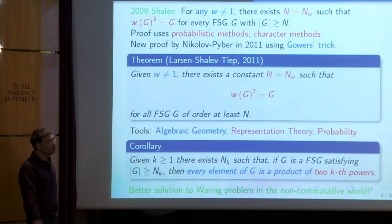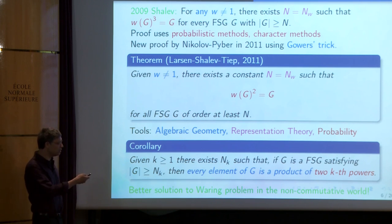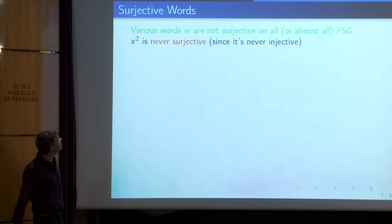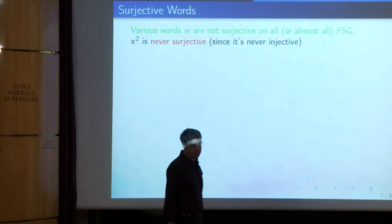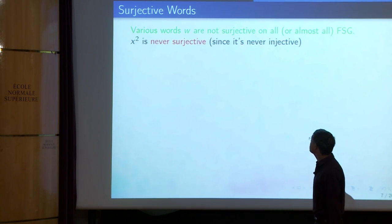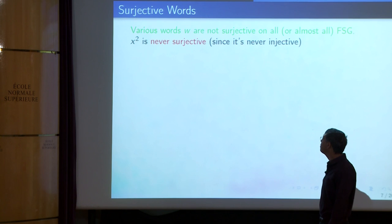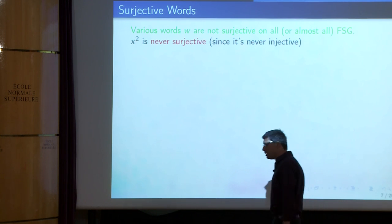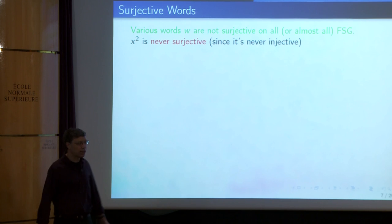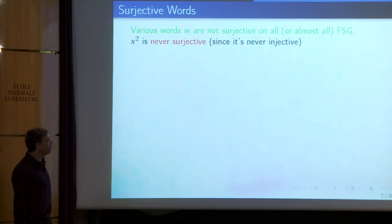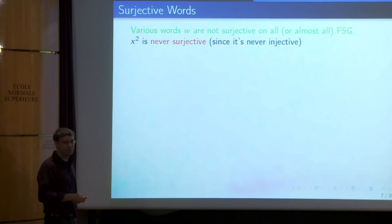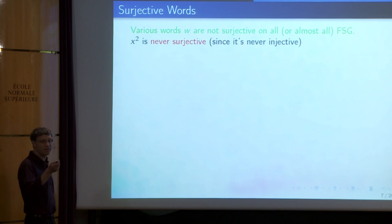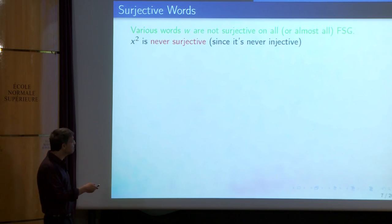You might ask: maybe even two can be reduced to one, namely wG = G, so that the word map is surjective on finite simple groups. But this need not happen. Surjective words are words whose map is onto every finite simple group. For example, x^2 is never surjective, because finite simple groups contain an involution. This also shows that the previous theorem is in a way best possible.